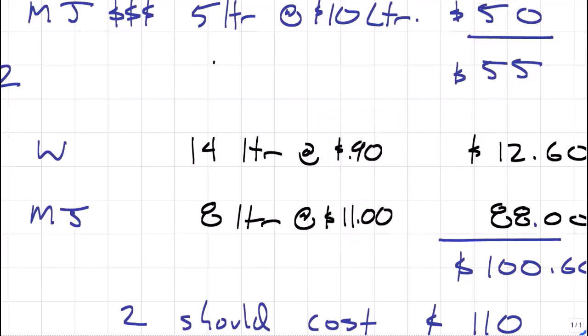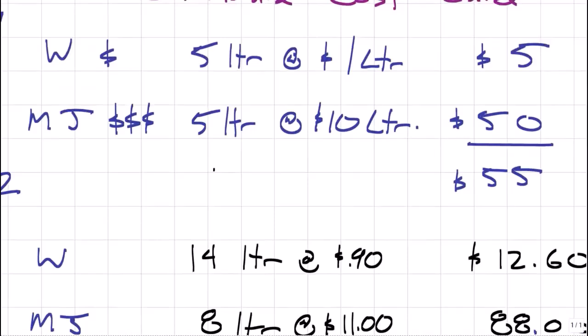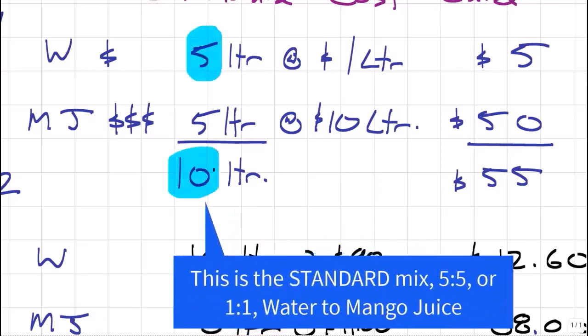Now, let's understand the mix variance, everybody. The mix variance, we're looking at the ratio of the inputs and 10 liters total goes in. Here, you need to understand what's the cheap stuff, what's the expensive stuff. So the water is the less expensive ingredient, the mango juice, the more expensive, and we see that the ratio of the inputs should be 5 to 10, 5 to 10, or 50-50, one-to-one mix.